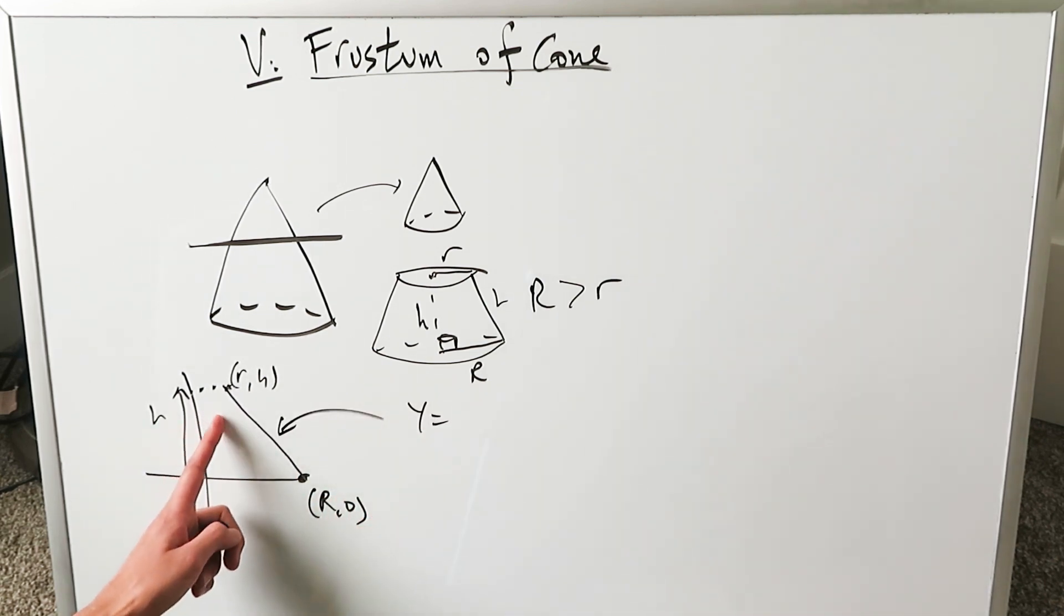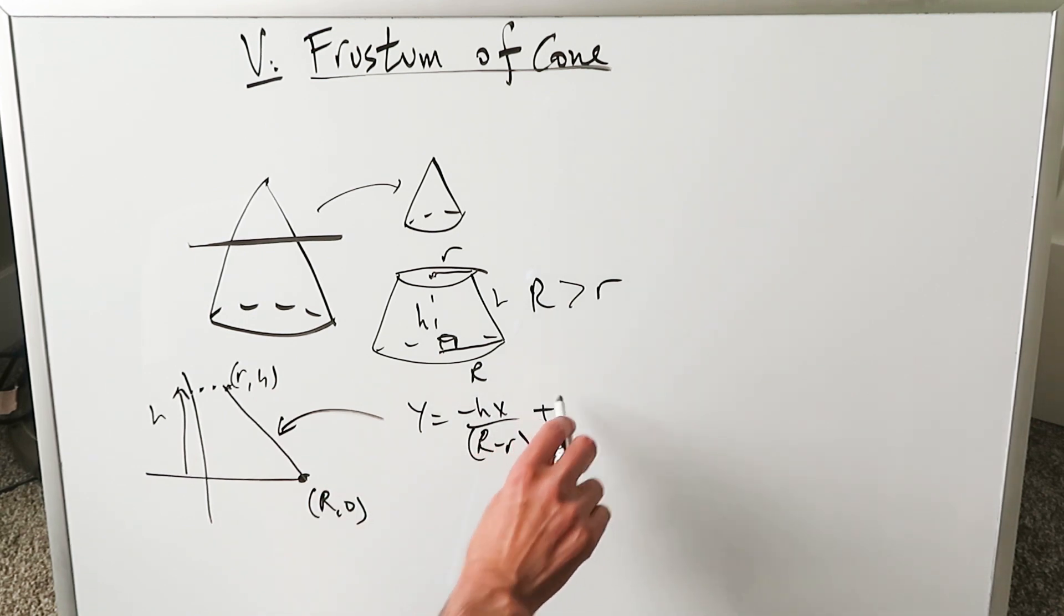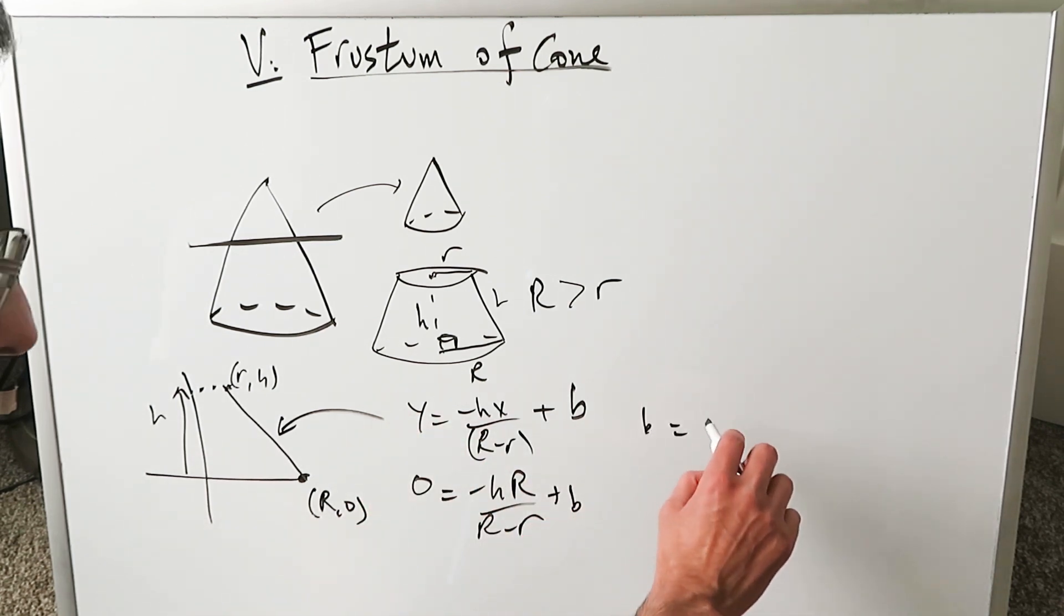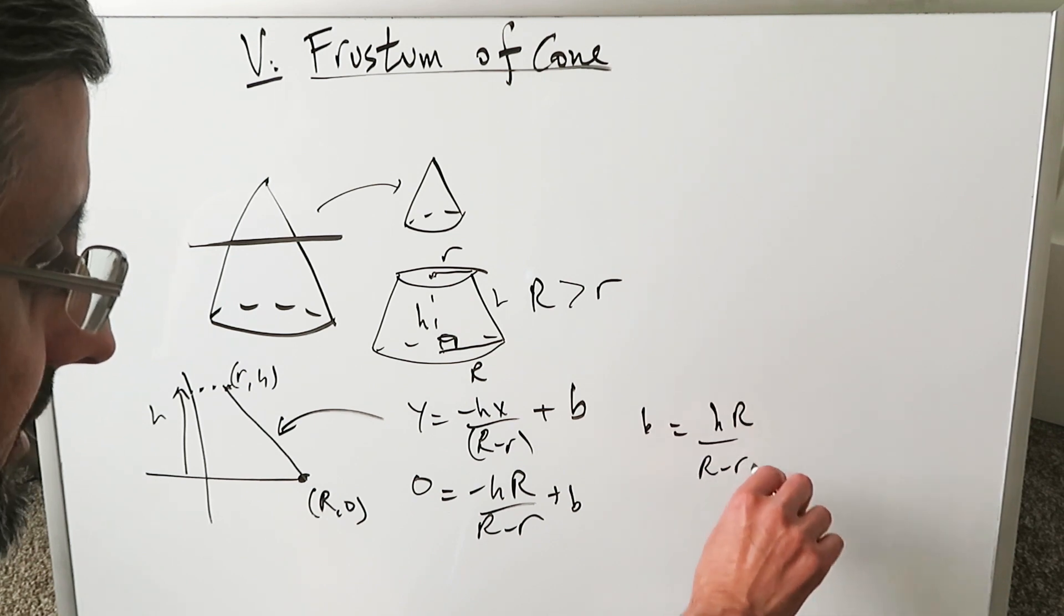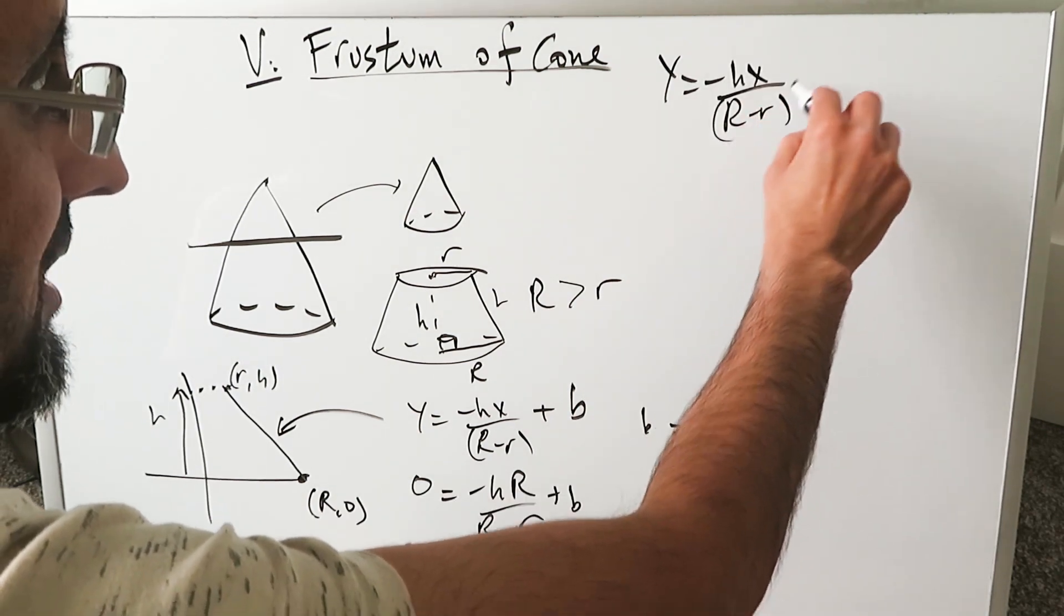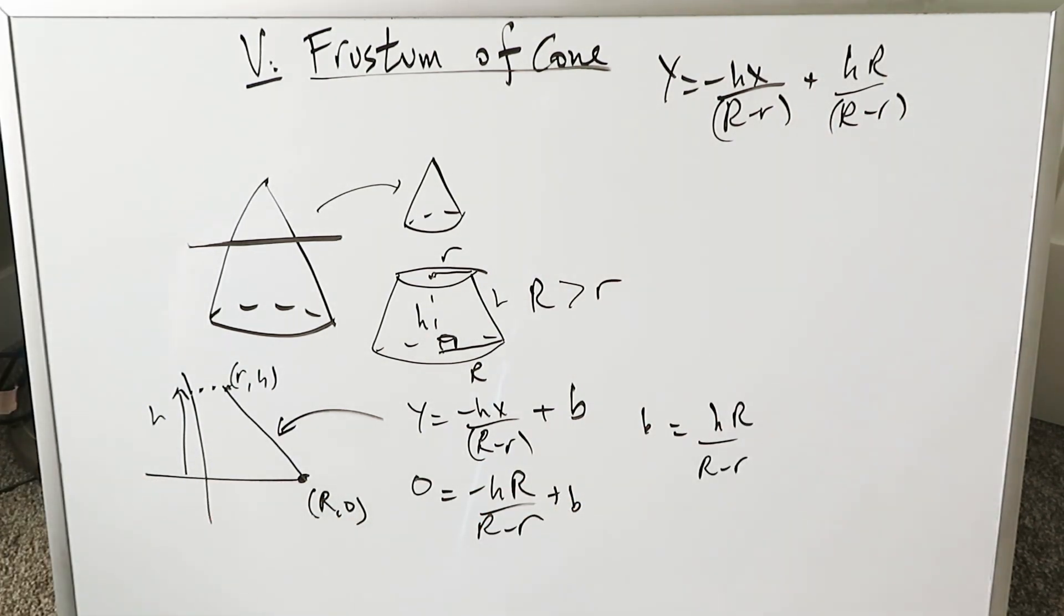You have y is equal to the slope and what's the slope over here? You're going to have a minus hx over x2 minus x1 which is R minus r plus y-intercept. You can solve for that y-intercept by using this point. 0 is equal to minus hR over R minus r. Here's my x and y which I've put over here and I'm solving for B. B is equal to hR divided by R minus r. Now I have everything with regards to an equation. Y is equal to minus hx over R minus r plus y-intercept which is hR divided by R minus r. Of course I'm doing everything here eventually with respect to dy or a y-axis rotation.